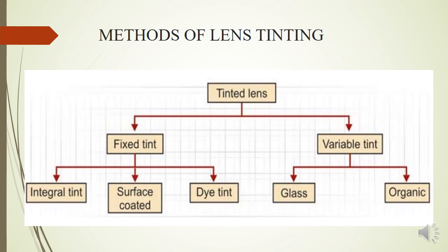An integral tint means the color is achieved by adding metallic compounds into the glass material itself. A particular metallic compound is added into molten glass and mixed completely, so the photochemical giving the tint is evenly distributed throughout the material, resulting in an even color. These are generally done in glass lenses.